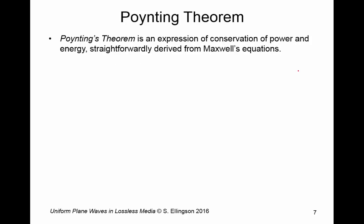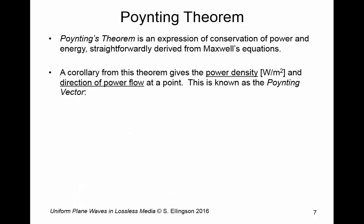Next, we'd like to invoke the Poynting theorem. Now the Poynting theorem is something that you have undoubtedly encountered in an undergraduate course in electromagnetics. Poynting's theorem is an expression of the conservation of power and energy straightforwardly derived from Maxwell's equation. What we're really interested in here, though, is a corollary to the theorem, which gives the power density, and by this I mean watts per meter squared, power per unit area, and the direction of power flow at a point. So the quantity that relates these things is known as the Poynting vector, and this is one way in which you can describe the Poynting vector.